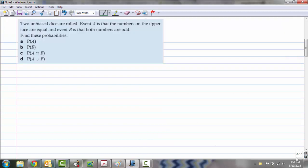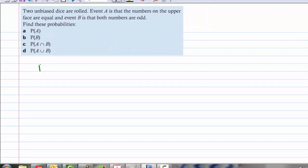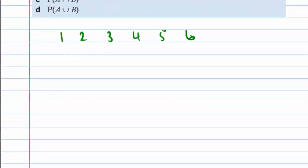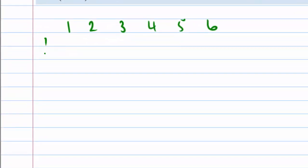So let's look at some examples. We're rolling two dice. Event A is the numbers on the upper face are equal, and event B is that both numbers are odd. So what we need to do is write down what's called a sample space. The sample space consists of all the possible outcomes that we could have in this experiment. So for this one, we're going to do 1, 2, 3, 4, 5, 6. I'm going to arrange this in a grid.